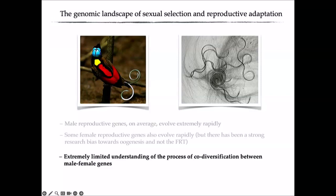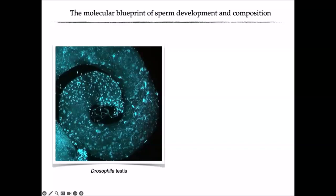Very few people do integrated studies of male and female interactions, and the field has historically focused on male reproductive genetic architecture. Testes gene expression patterns were characterized early on, and examples of rapidly evolving testes-specific genes generated a positive feedback driving more such studies. My own research has focused on spermatogenesis — trying to correlate patterns of evolution for genes involved in male reproduction with predicted levels of post-copulatory sexual selection.